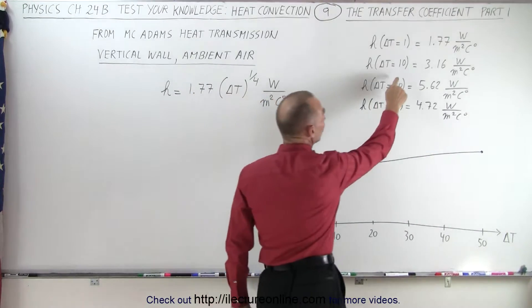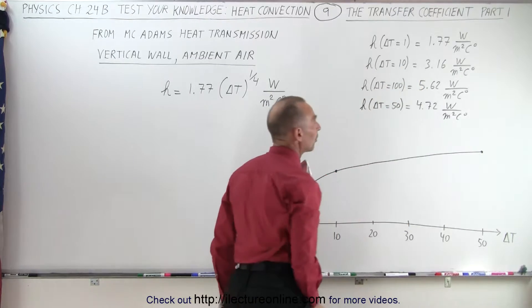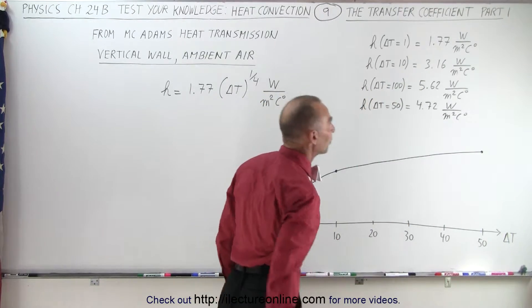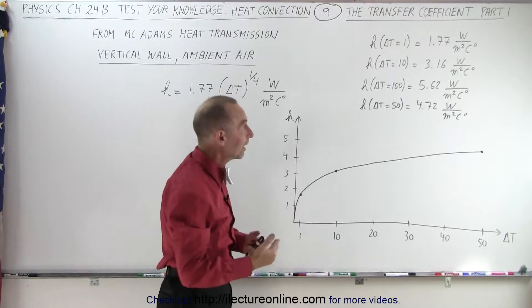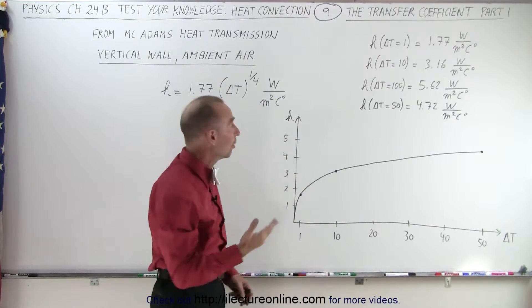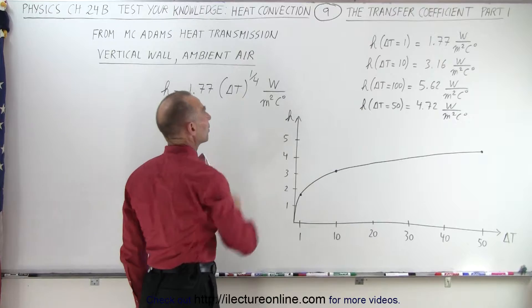Then when the difference in temperature is 10 centigrade degrees, it goes up to 3.16, and 100 goes up to 5.62. You can see that it's a non-linear change because of the delta T to the one-fourth power.